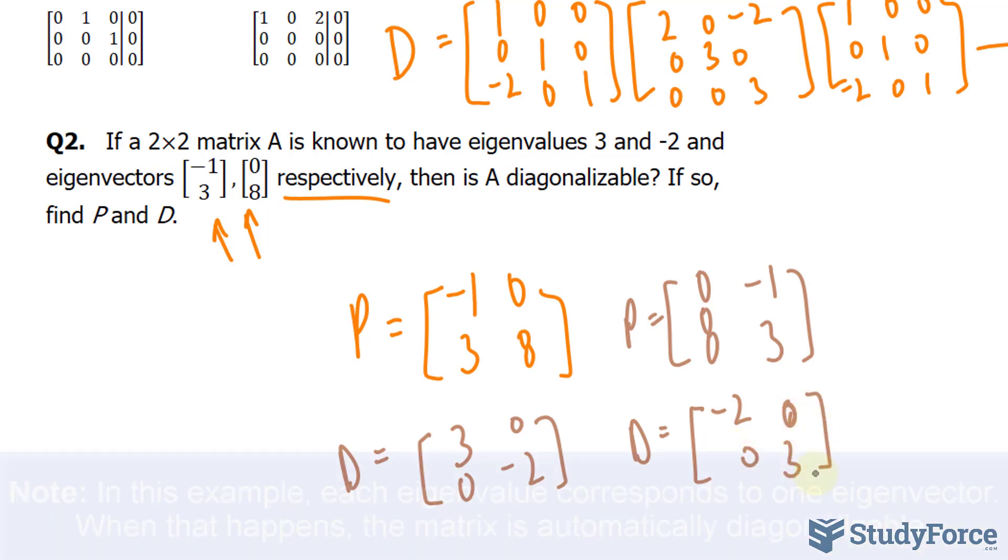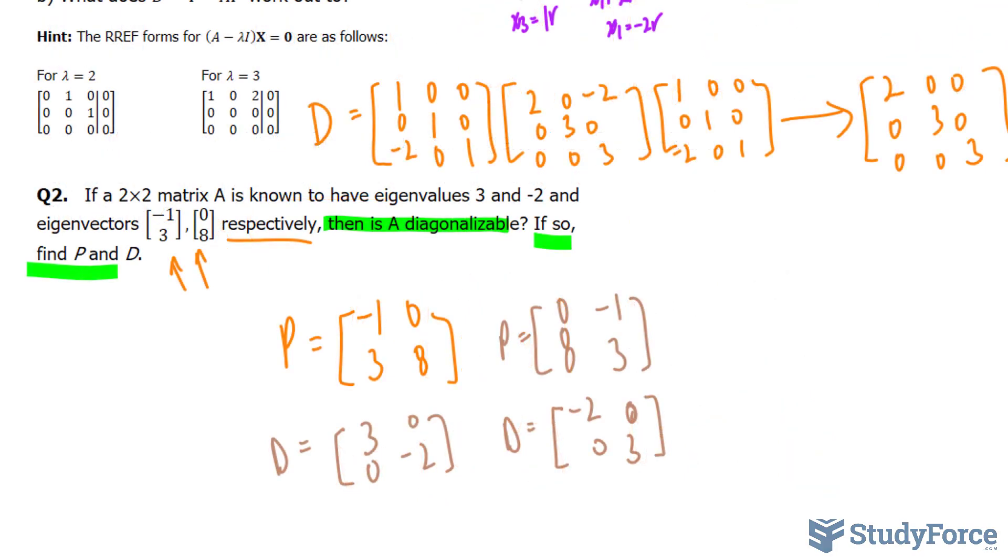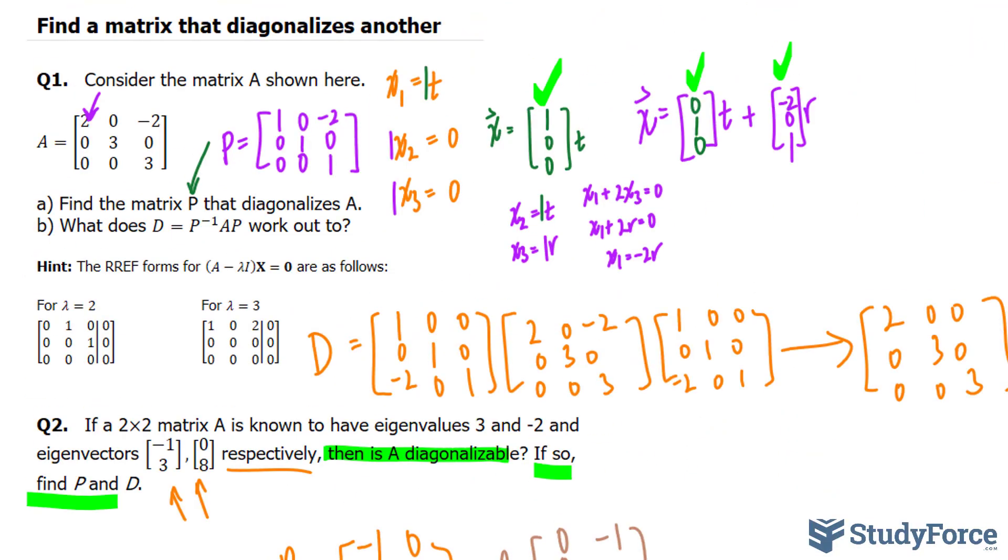A is diagonalizable because we have two linearly independent eigenvectors. On the contrary, if there were not enough linearly independent eigenvectors, then it's not diagonalizable. So if it was 3 by 3 and we only had two eigenvectors, then it wouldn't work. In this case, it does. And there you have it. A few examples on how to find the matrix that diagonalizes another using eigenvalues and vectors.